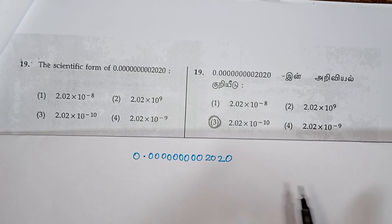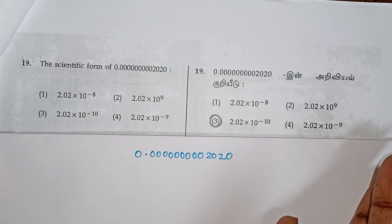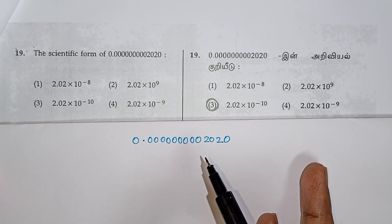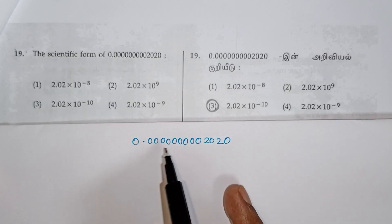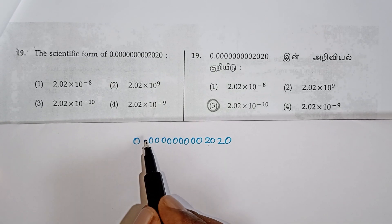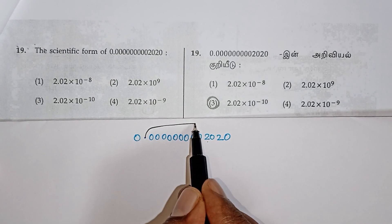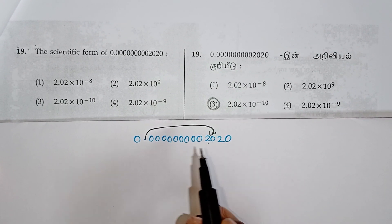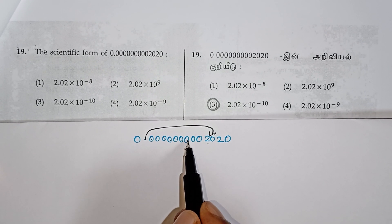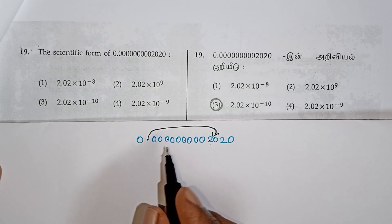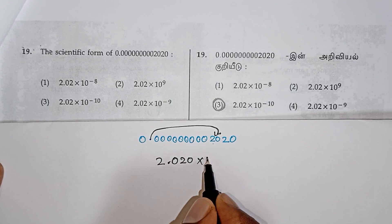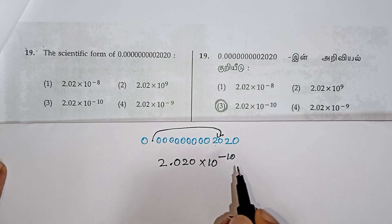The scientific form of the decimal number. One digit number — remove the extra digits, giving ten to the power of minus ten, then two.